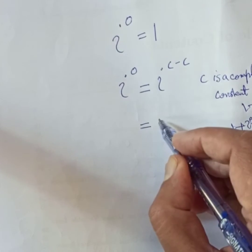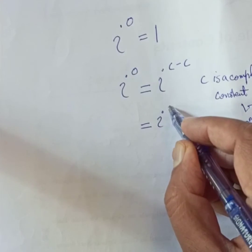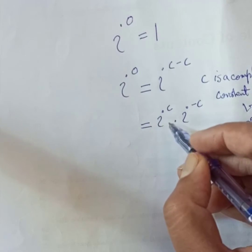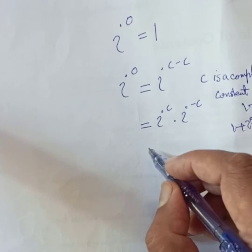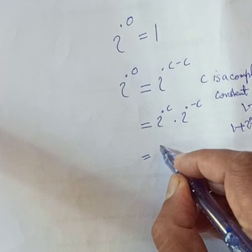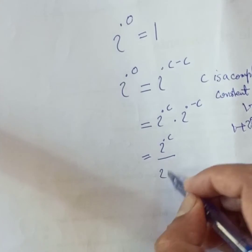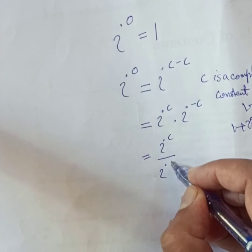Now by exponent rule, we can split this in this way: iota power c into iota power minus c. And this second iota power c can be written in this way: iota power 1 over iota power c.